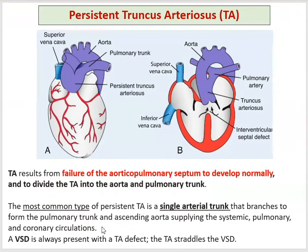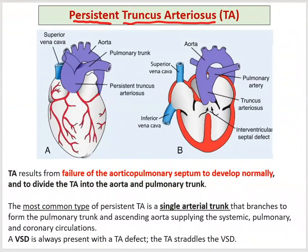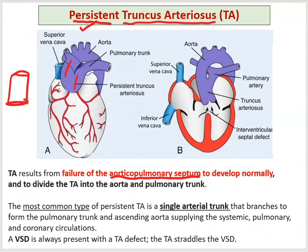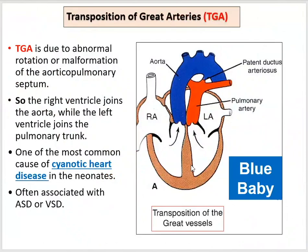The first defect is persistent truncus arteriosus. This occurs because of failure to form the aorticopulmonary septum, so the septum does not exist. The truncus arteriosus persists as a single, continuous vessel — the aorta and pulmonary trunk share the same part. The persistent truncus arteriosus overrides both ventricles and is usually accompanied by a ventricular septal defect.